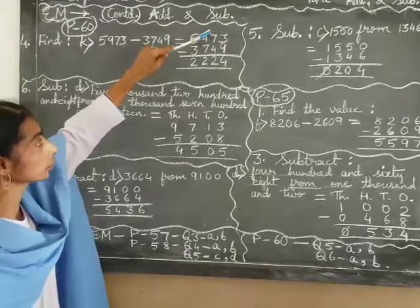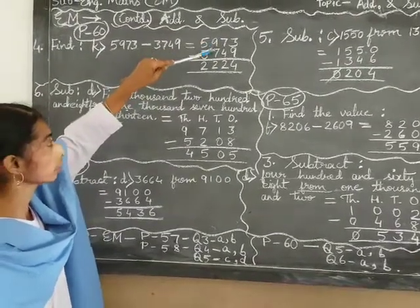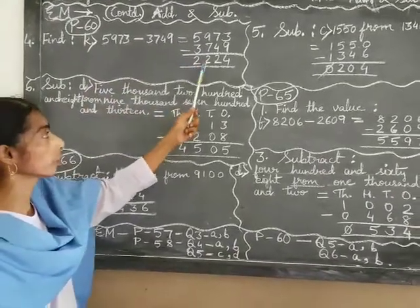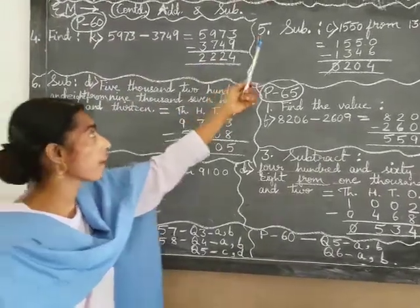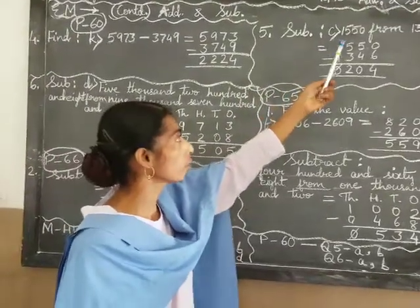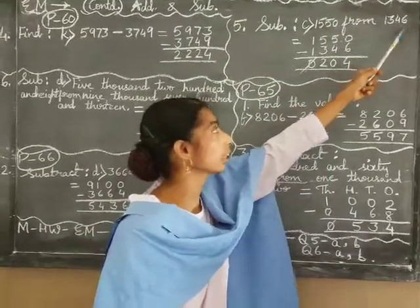So here we have 6, 4, 2, 9, 725. 5, 3, 2, 5 is 2 times 2, 224. 5 is 1,550. 1,346.